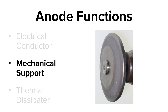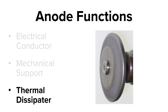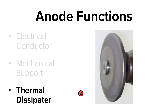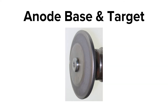The second function of the anode is to provide mechanical support, which allows the tungsten to be attached to the rotating anode. The third function is to be a thermal dissipator, meaning to move heat. As the electrons come from the cathode and hit the anode, 99% of those electrons' kinetic energy is converted to heat — not x-rays. That means only 1% of the electrons' kinetic energy is actually converted to x-rays.